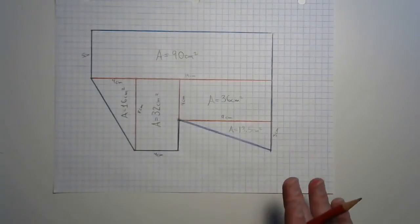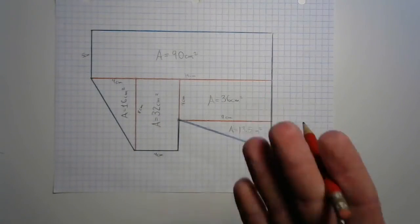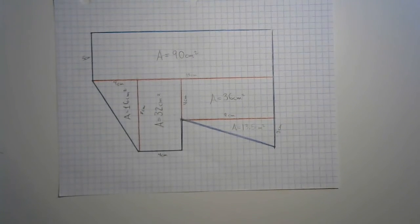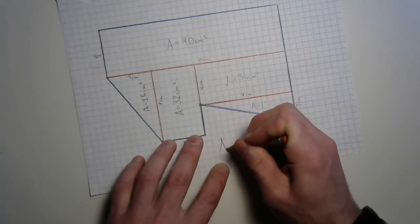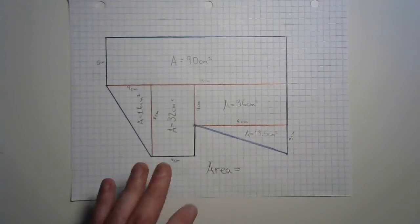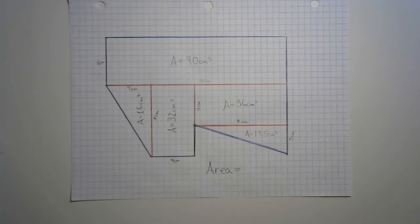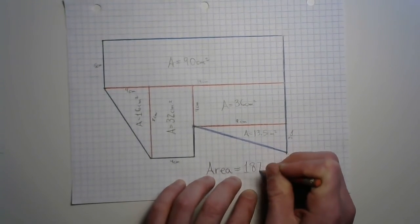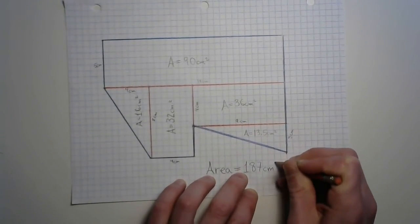So now that we have all these different areas, we can add these up. And once we have all of that, we'll have the total area of this amazing shape. Have you added all that up yet? Come on. What is it? What is it? All right. 187 centimeters squared.